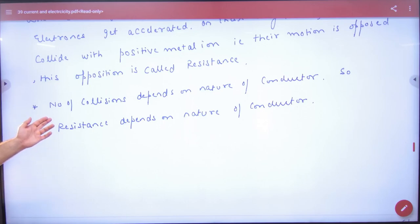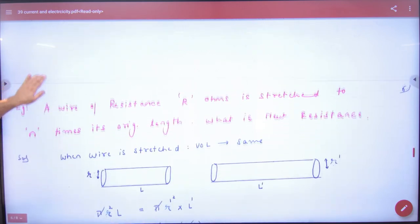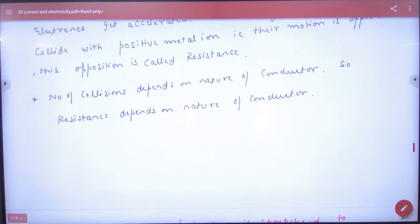The number of collisions depends upon the nature of the conductor - some have more, some have less. So resistance depends upon the nature of the conductor.